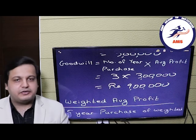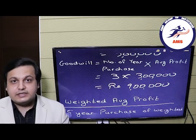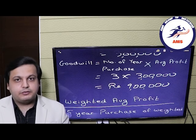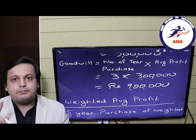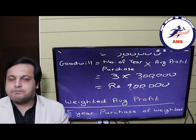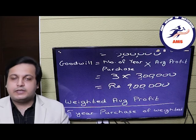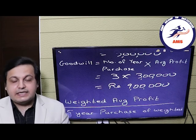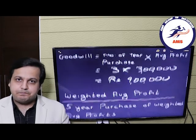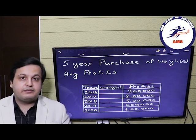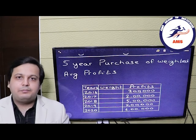Now we will move on to the weighted average profit method. It is similar to the average profits — the only difference is that we assign weights to each and every year. In the exams, the weights will be given to you. If they are not given, then you will have to assign these weights by yourself. We have been given that we have to calculate the goodwill using 5 years purchase. So whatever is the weighted average profit, we will multiply it by 5 to get the goodwill.